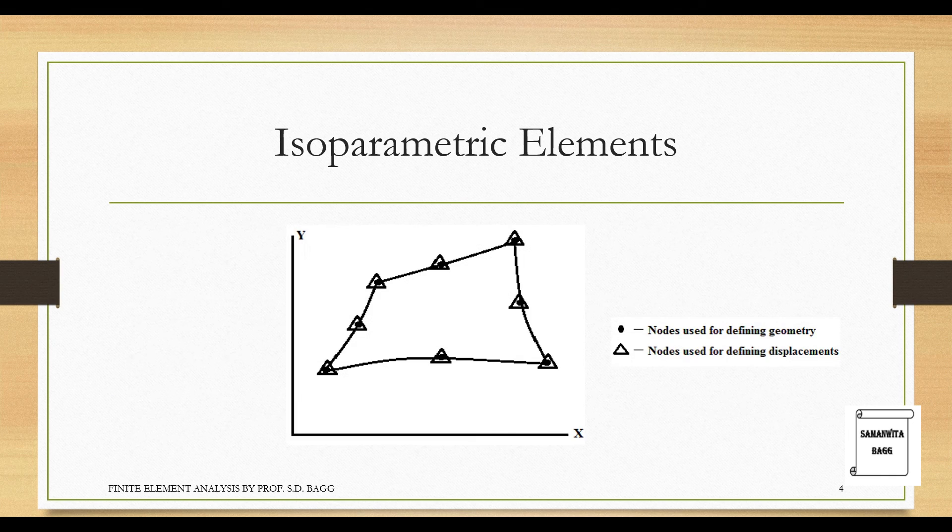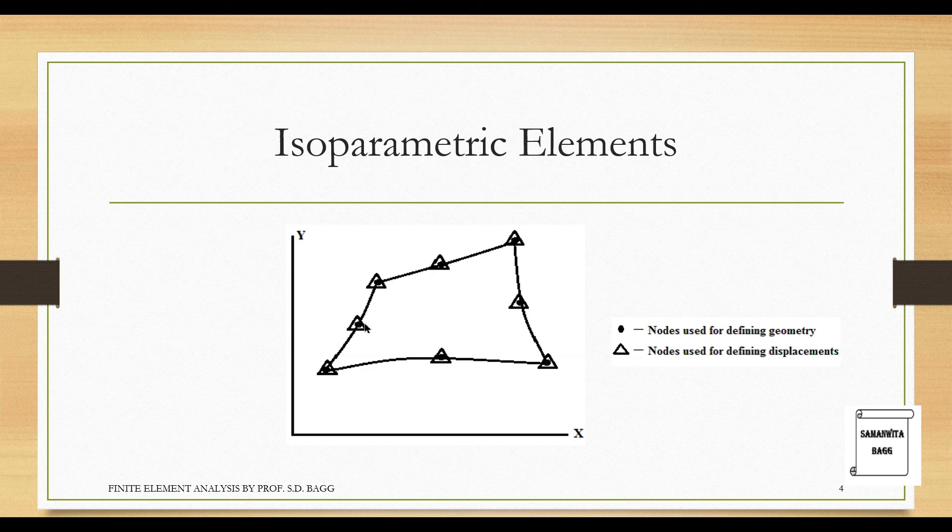We have already seen these kind of isoparametric elements when we were discussing about quadrilaterals having four nodes where you have derived the shape function. So you can go through that same derivation, you will understand that it is also an isoparametric element. If you talk about this isoparametric element that you see in the figure, this is an 8-noded isoparametric element.